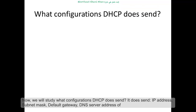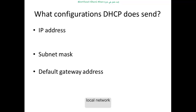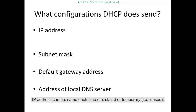Now we will study what configurations DHCP sends. It sends IP address, subnet mask, default gateway, and DNS server address of the local network.